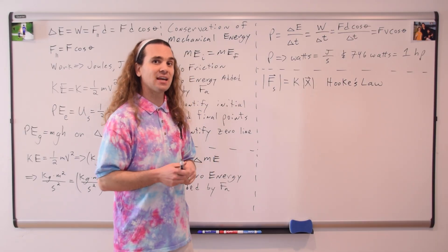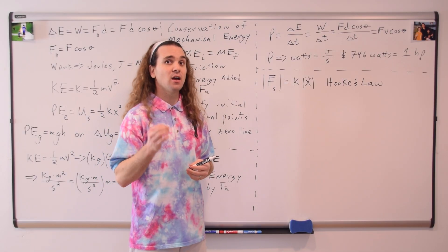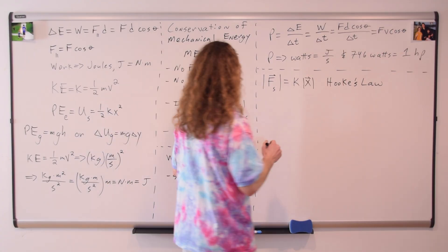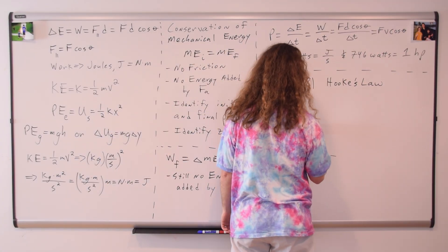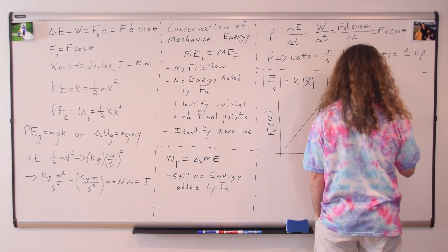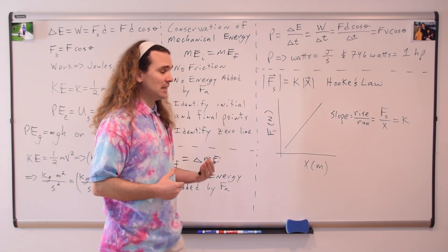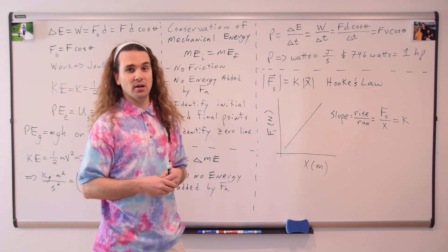And, if you make a graph of the force of a spring versus the displacement from equilibrium position, the slope of the best fit line will be the spring constant of the spring.